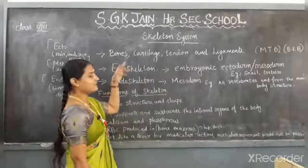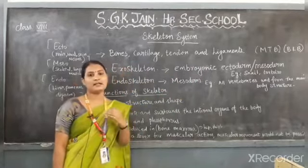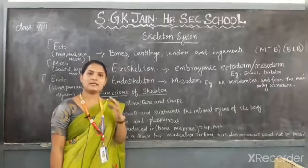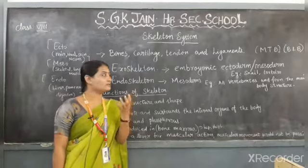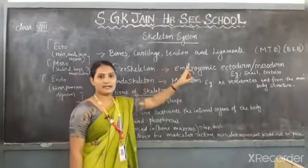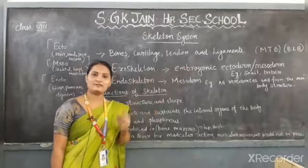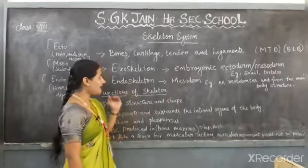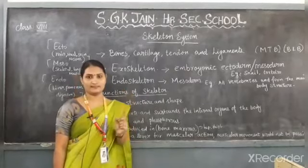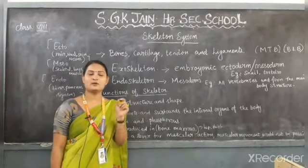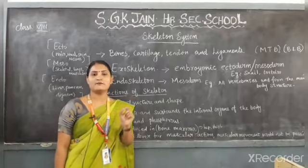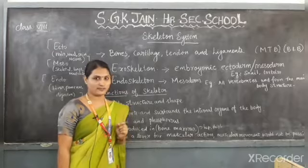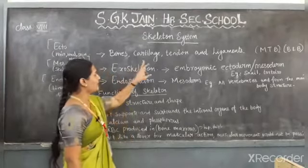So, as we already know, there are 206 bones present in our body. These bones are joined by tendons and ligaments, which are connective tissues. Tendons and ligaments are the connective tissues which connect the two bones together, so all 206 bones in our body are joined together by these connective tissues.